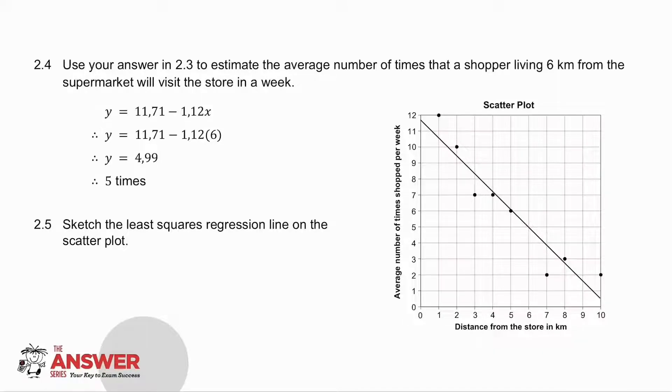2.5 asks you to sketch the least squares regression line. My Y intercept is 11.71. So I've got that point. I know when X is 6, Y is 5. So when X is 6, Y is 5, I've got that point, and I've got the Y intercept. So there's the equation of my least squares regression line.